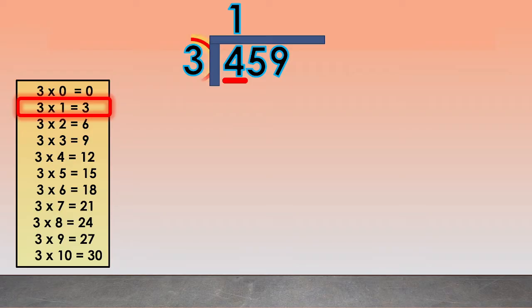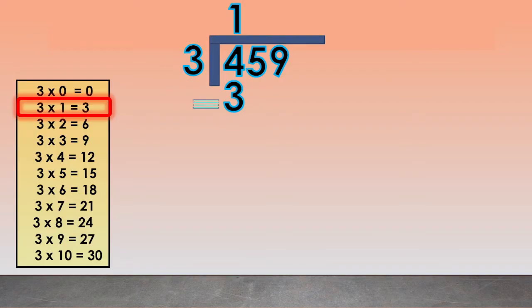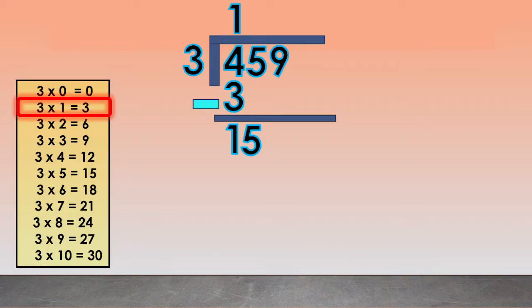Now multiply 3 times 1 equals 3. We write 3 below the 4. Subtract 4 minus 3 equals 1. Next, bring down the digit 5, so it becomes 15. Find how many times 3 goes into 15. We will use the multiplication table of 3 and find the product equal to or nearest to 15.